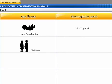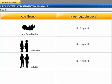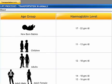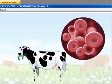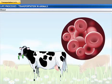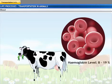For children, the normal range is between 11 and 13 gram per deciliter, and for adults it is between 12 and 18 gram per deciliter. An adult male has a hemoglobin level between 14 and 18 gram per deciliter, and in adult women it is between 12 and 16 gram per deciliter. The normal range of hemoglobin is not the same for all animals — in cattle, for example, the range is between 8 and 19 percent, which is quite different from that of human beings.